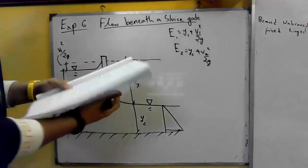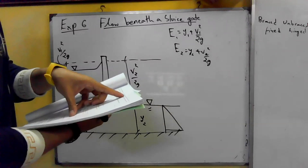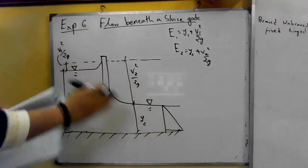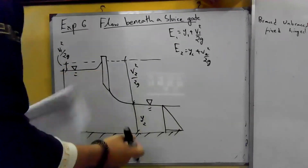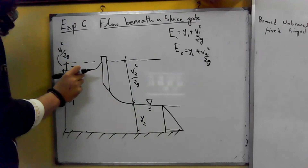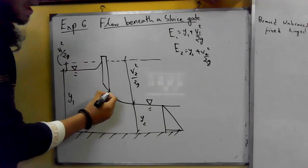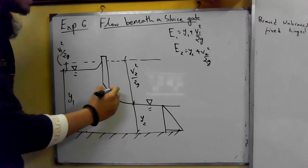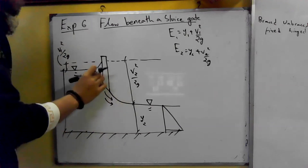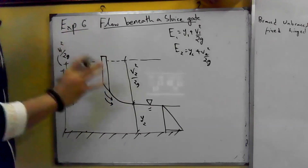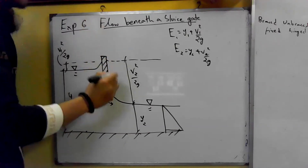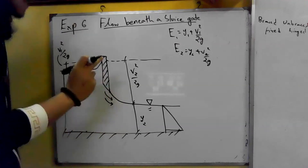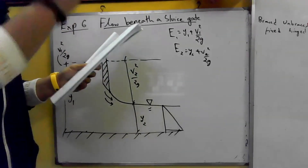Basically, however, the pressure distribution on the gate cannot be hydrostatic, as the pressure must be atmospheric at both the upstream water level and at the point where the jet springs clear of the gate. The low pressure–high pressure difference is exactly atmospheric. This is why the gate hydrostatic force calculation is still correct — because at the point where the water jet exits, the atmospheric pressure is effectively zero.